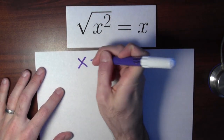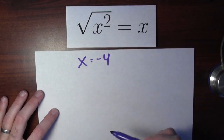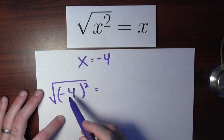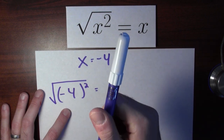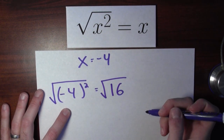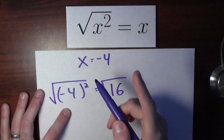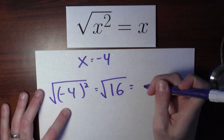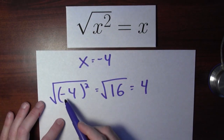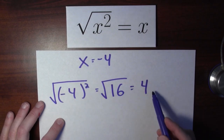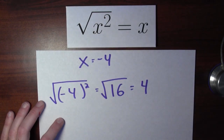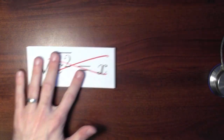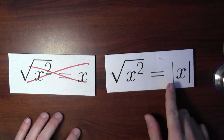Let's do a specific example where x is minus 4. If I replace the x's with minus 4, the left-hand side is the square root of minus 4 squared. Now, minus 4 times minus 4 is 16, so this is the square root of 16. By definition, the square root is the non-negative number which squares to 16. There are two numbers that square to 16: plus 4 and minus 4. But the square root is, by convention, the non-negative one. So this is equal to 4. What is true is that the square root of x squared is the absolute value of x.